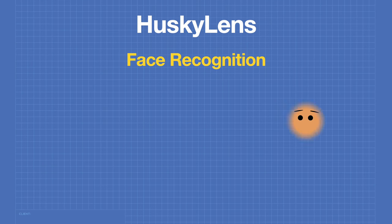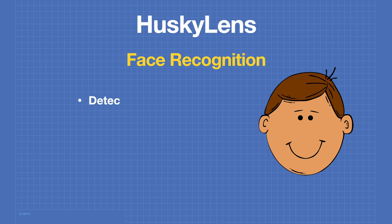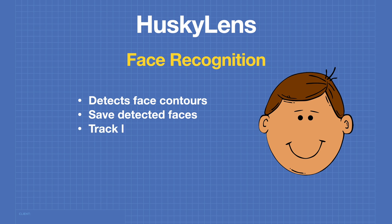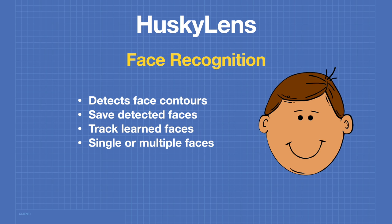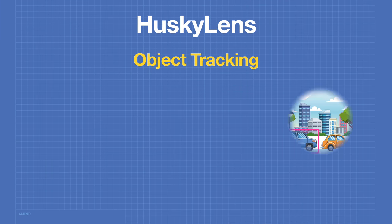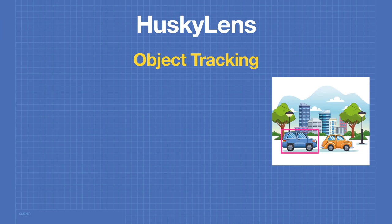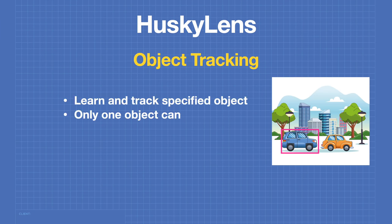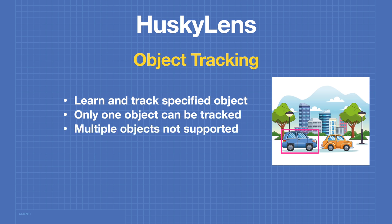In face recognition mode the Husky Lens detects face contours, and you can save and track detected faces. It's capable of working with single or multiple faces. With object tracking, the Husky Lens can learn and track a specified object, though only one object can be tracked at a time and multiple objects are not supported.